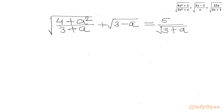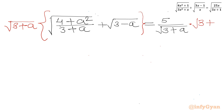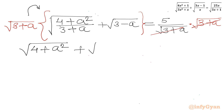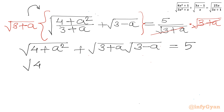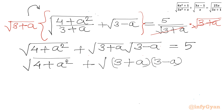Now I will multiply both sides by square root of (3 plus a). Then multiplying square root of (3 plus a) into the bracket, I can write square root of (4 plus a²) plus square root of (3 plus a) times square root of (3 minus a), equal to 5.